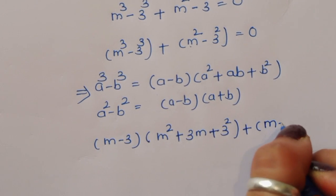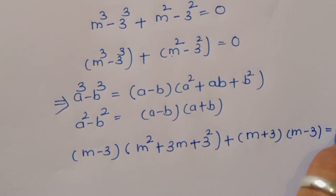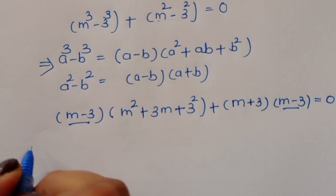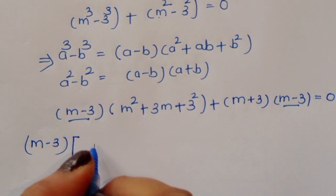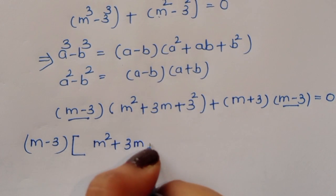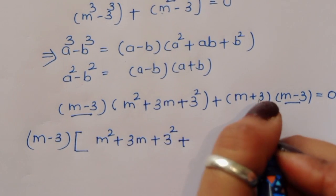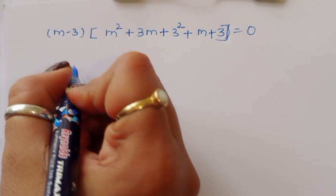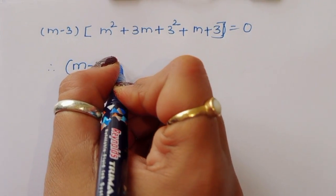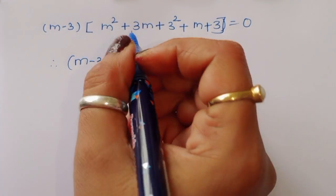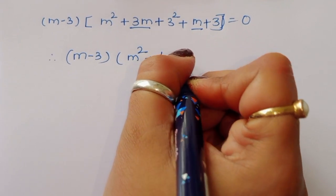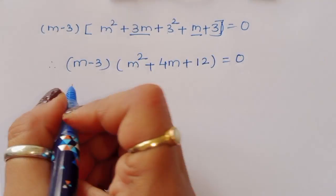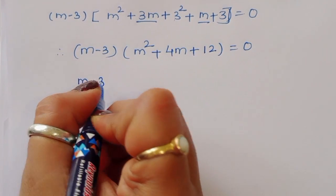We can factor out (m - 3): (m - 3)[(m² + 3m + 9) + (m + 3)] = 0. Combining the bracket: m² + 3m + 9 + m + 3 = m² + 4m + 12. So we get (m - 3)(m² + 4m + 12) = 0, giving two equations: m - 3 = 0, or m² + 4m + 12 = 0.